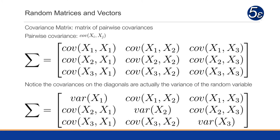Sigma is equal to the covariances of each one of the variables with each other. If I have three columns of data, I will end up with a three-by-three covariance matrix. Note that the covariances on the diagonals are actually the variances of the random variable, so the diagonal becomes the variance of each one of the variables.